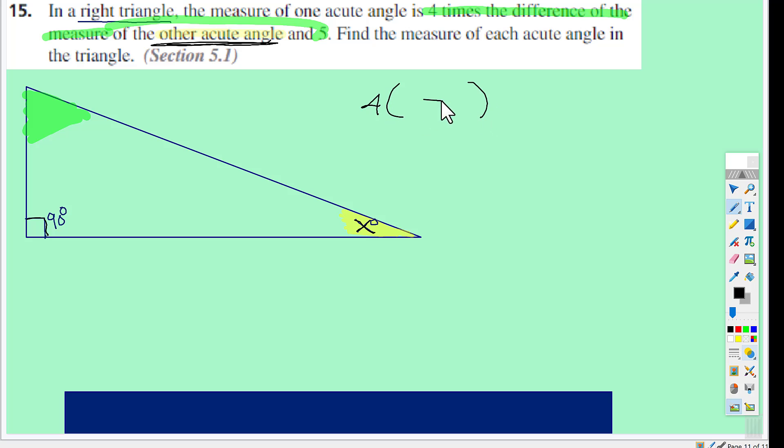That means four times, and inside parentheses, there will be a subtract symbol, and then you just put them in order as you read them. The acute angle and five, so this angle right here is four times x subtract five, and all of that is an angle.